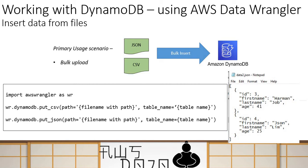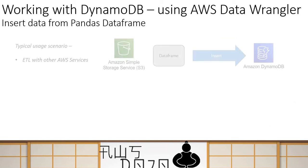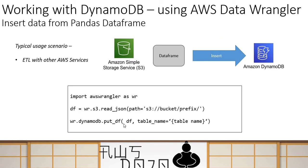If you are putting data into your DynamoDB table and the primary key does not exist in the table, it will insert the record. But if the partition key already exists in the DynamoDB table, it will simply update the record rather than insert it. So the same put_csv, put_json, and put_df methods handle both insert and update operations.